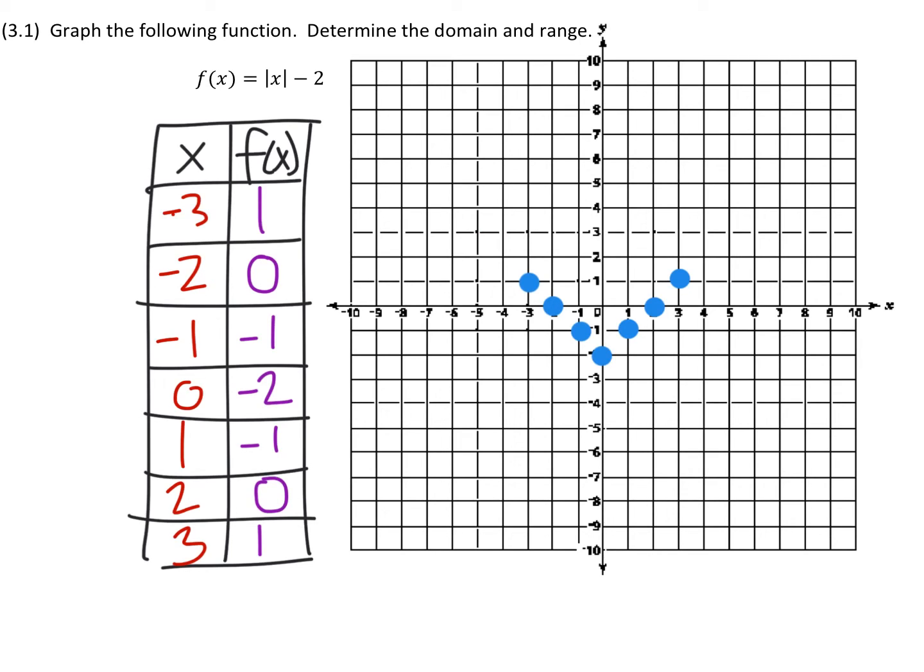So in other words, we could continue the pattern to the left and the right. And we can see this V pattern gives us two lines. Let's go ahead and put those in. And there's our graph. So the final thing we're going to want to do is find the domain and range.